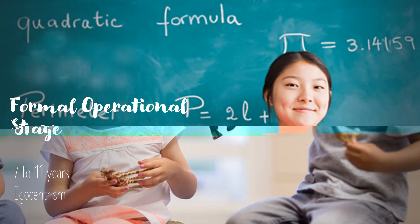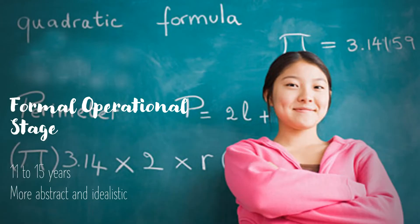The fourth stage is the formal operational stage, eleven to fifteen years. At this stage, the child's thinking becomes more abstract and idealistic.